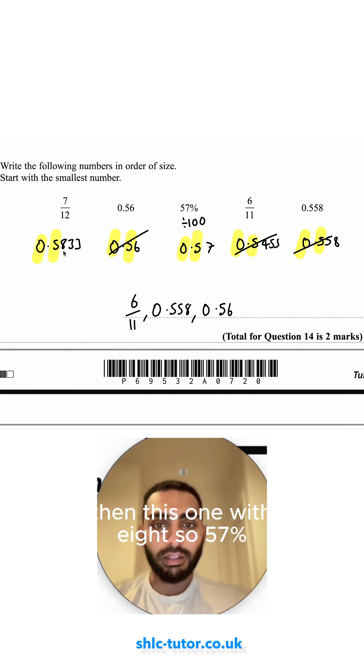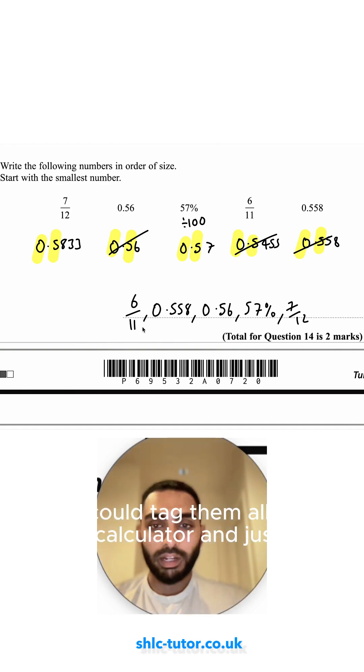Then it's going to be this one with a seven, and then this one with an eight. So 57%, and then seven over 12. You could check it. You could type them all into your calculator and just see if they get larger as you go on.